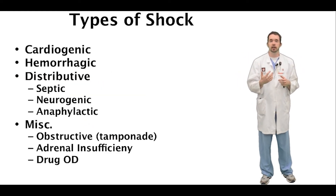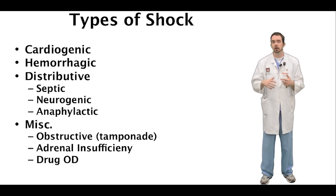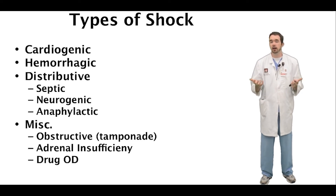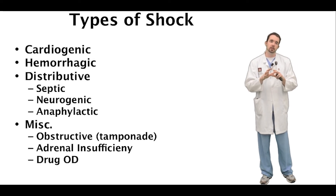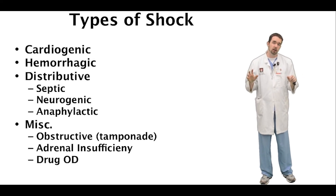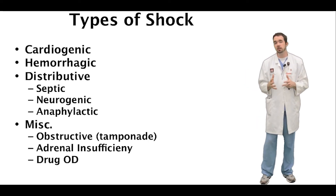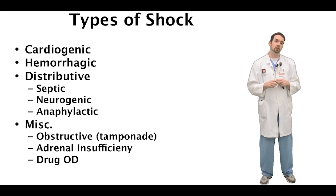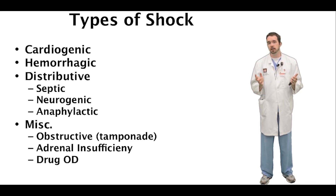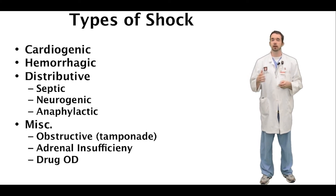The first is cardiogenic — simply a problem with the pump; the heart's not squeezing hard enough. Secondly, we have hemorrhagic shock or hypovolemia, seen in trauma patients or patients that are actively bleeding. Next, we have the distributive types of shock. Of these, sepsis is by far and away the most common, where we have systemic vasodilation. This vasodilation is also seen in neurogenic shock states and anaphylactic shock. And finally, you may sometimes encounter miscellaneous types of shock, such as adrenal insufficiency or obstructive states like cardiac tamponade.